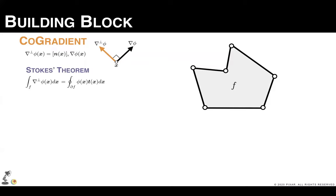And the core of our approach is the discretization of the co-gradient operator. The co-gradient is simply the cross product between the surface normal and the gradient vector. An important property of the co-gradient is that it obeys the Stokes theorem. This allows us to use a boundary integral, making our construction agnostic to the interior shape of the polygon.